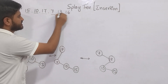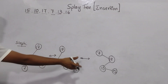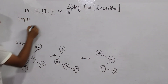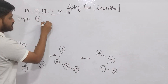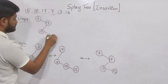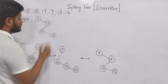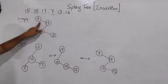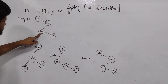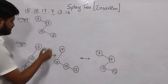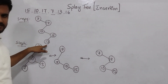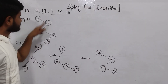Now let's insert 13 — step 5. Copying the last tree: 7 at root, 17 to the right, 10 as the left child of 17, and 15 to the right of 10. I want to insert 13. It is greater than 7, less than 17, greater than 10, but less than 15. So I write it to the left of 15. Now I must make the inserted value 13 the root node.